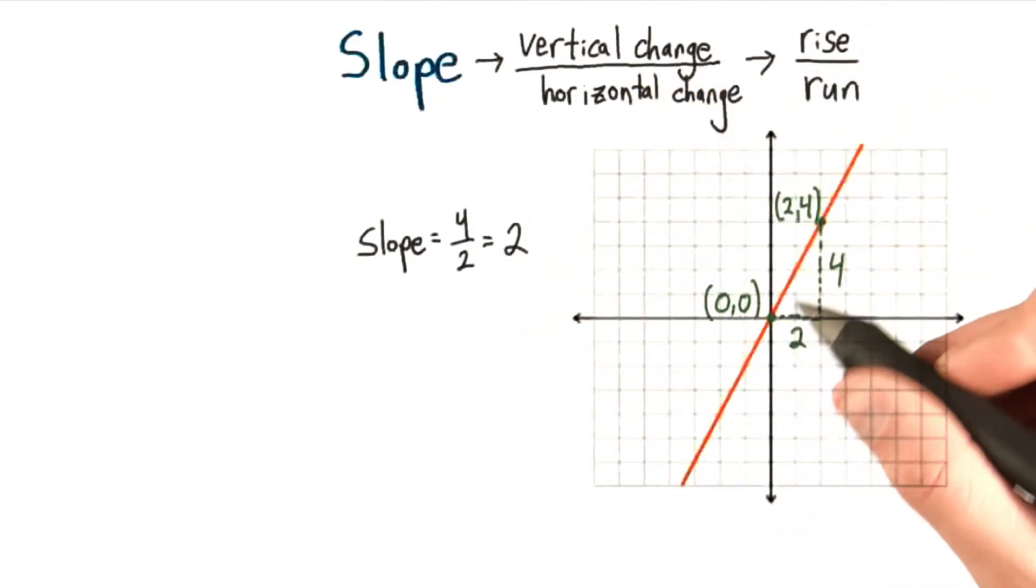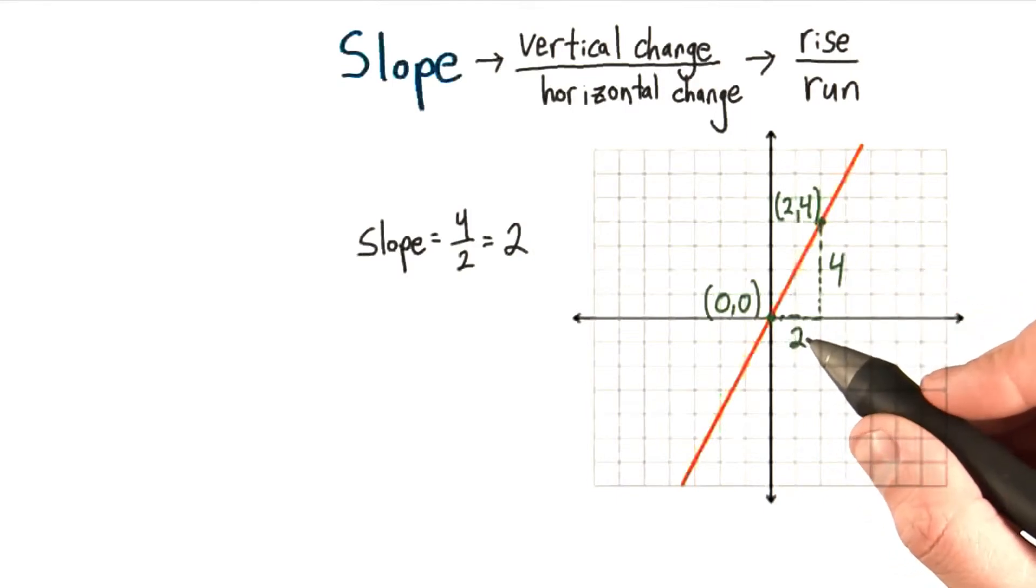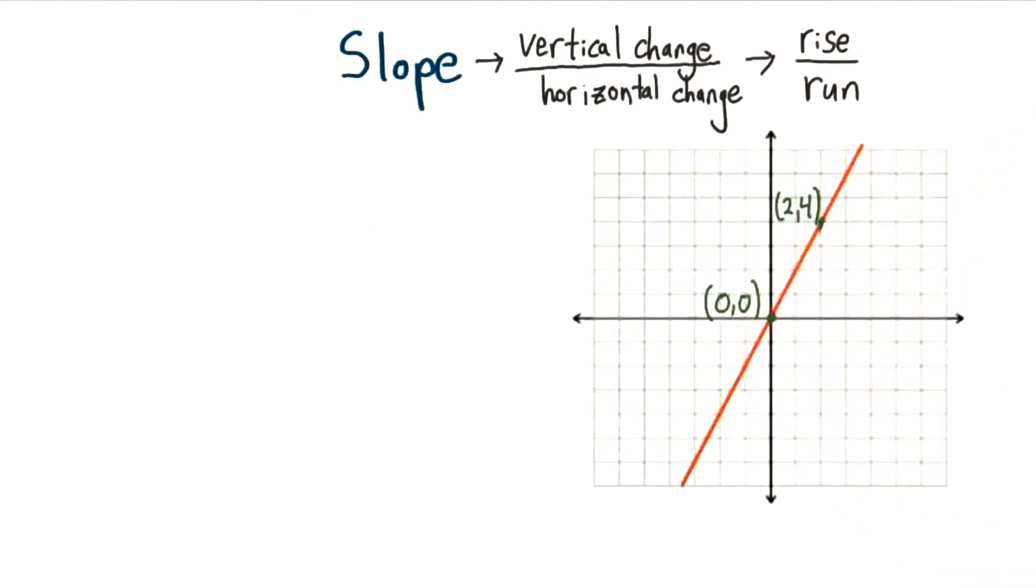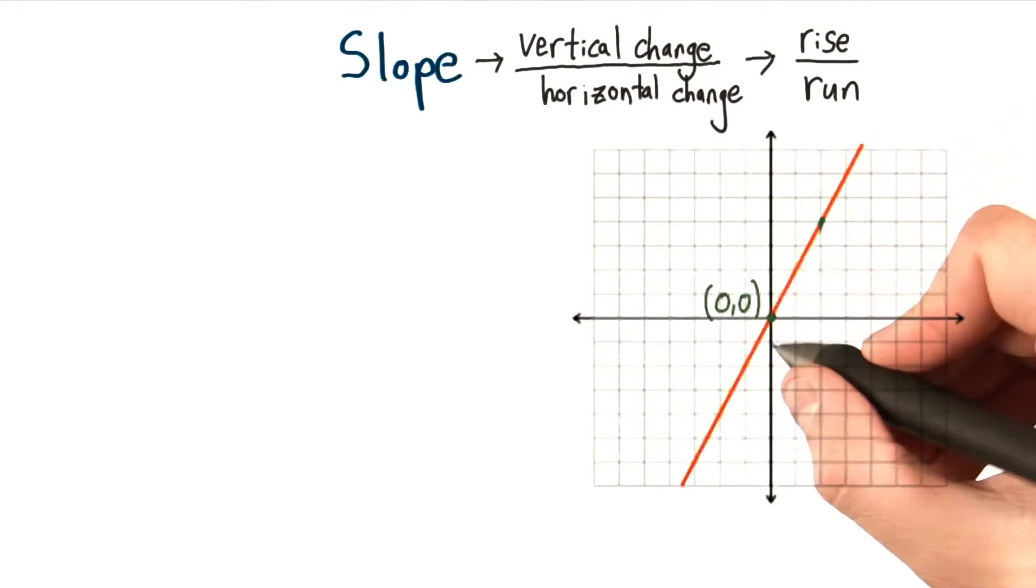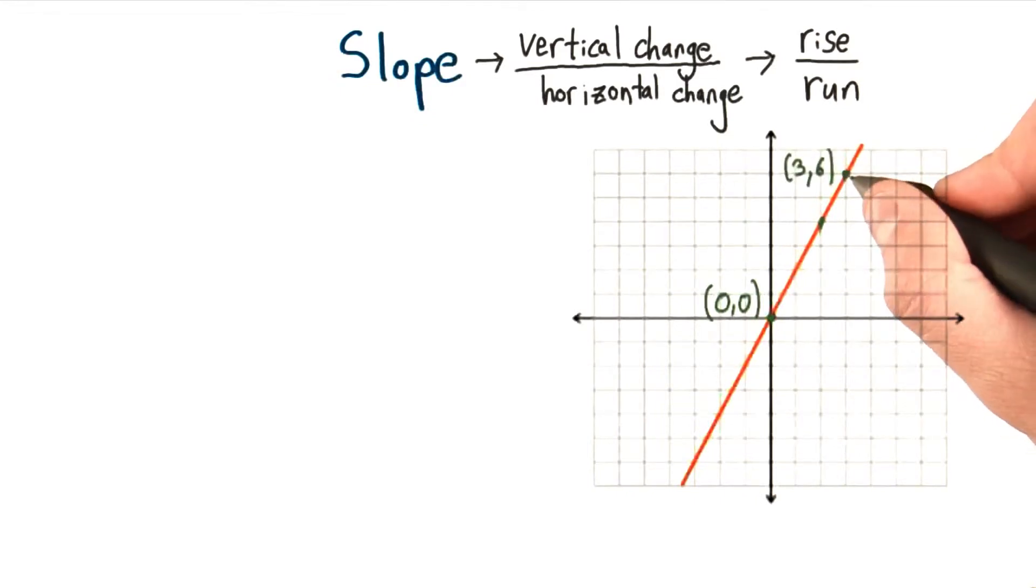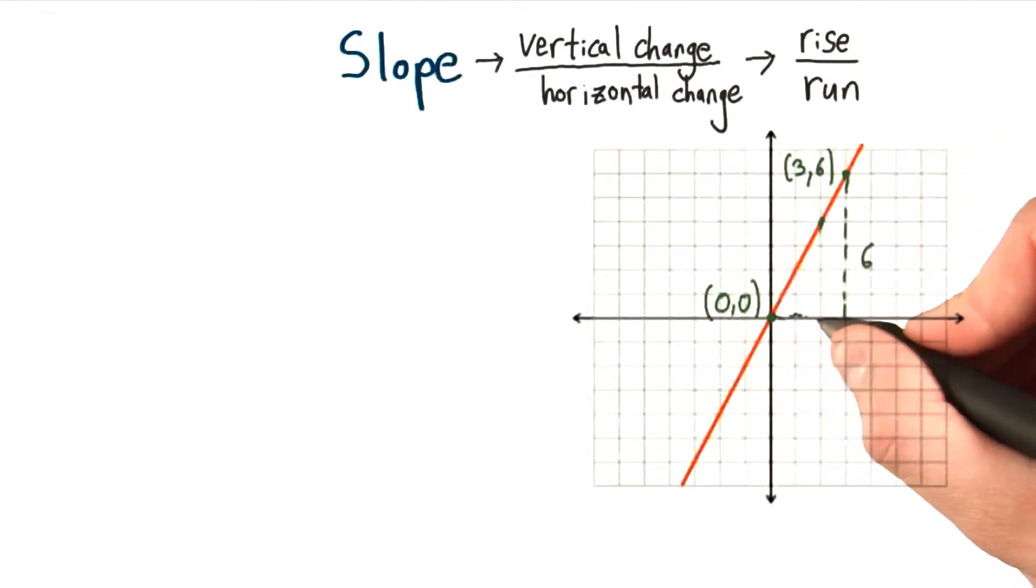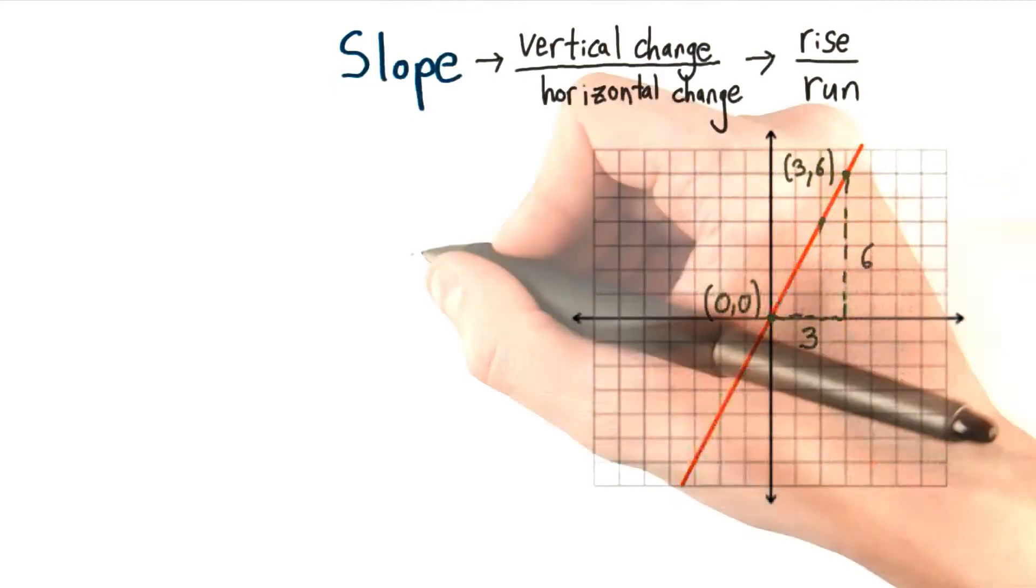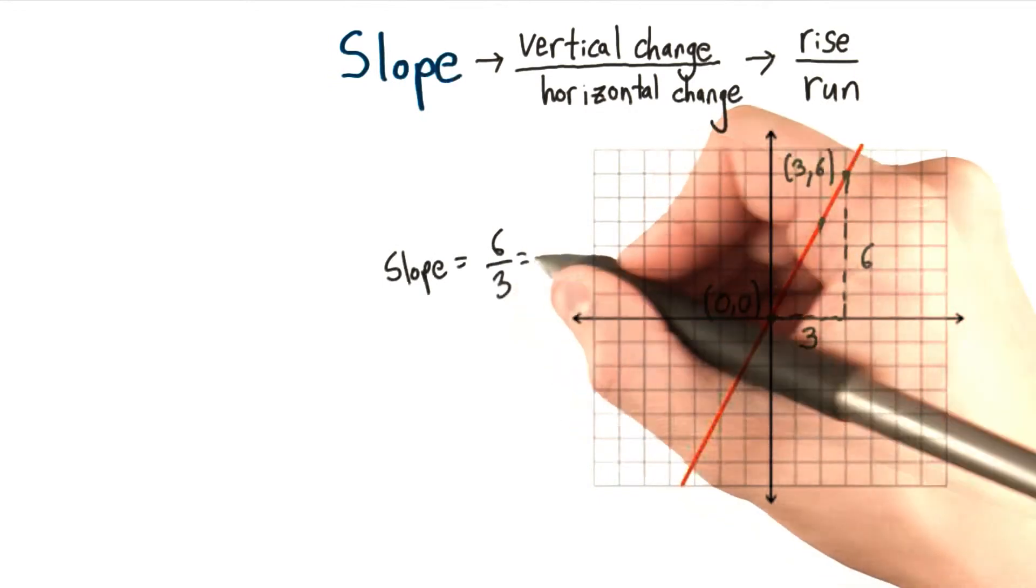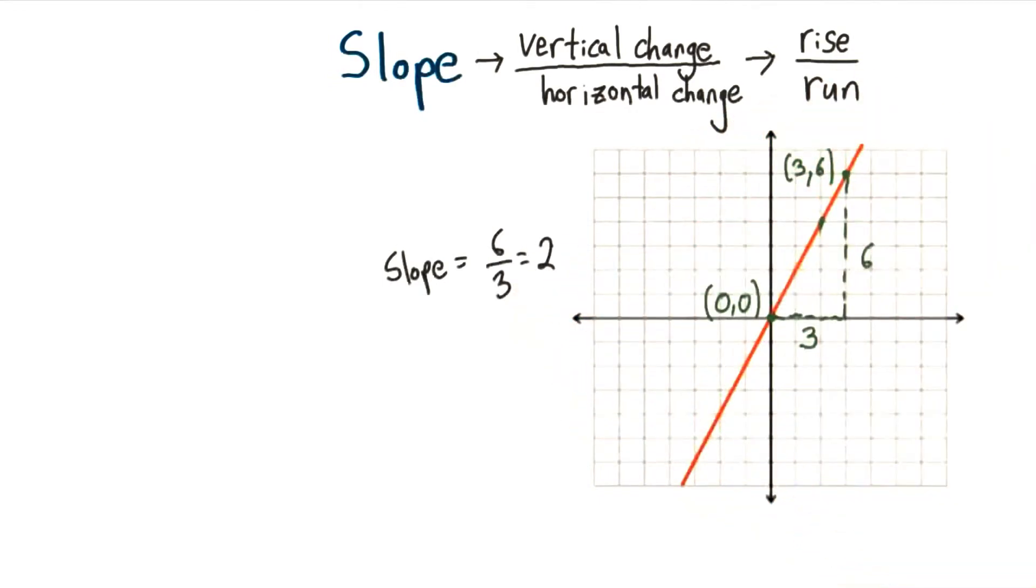Now let's calculate the slope of this line thinking slightly differently, and let's see what happens. Instead of using 0,0 and 2,4, let's use 0,0 and a different point, 3,6. Well now the rise is 6 and the run is 3. If I calculate the slope as the rise over the run, I still get a value of 2.